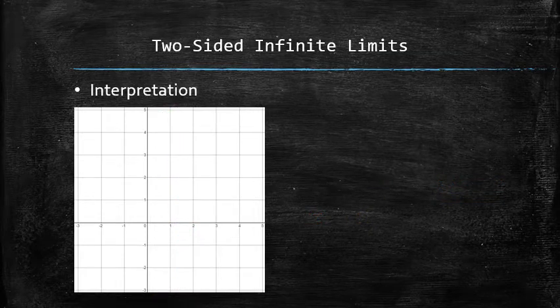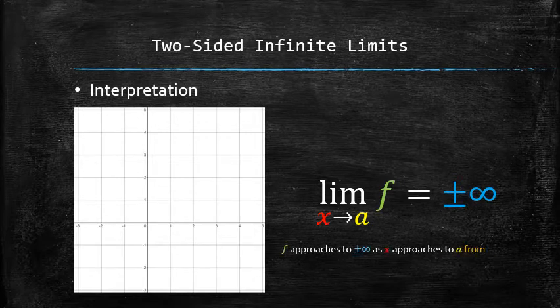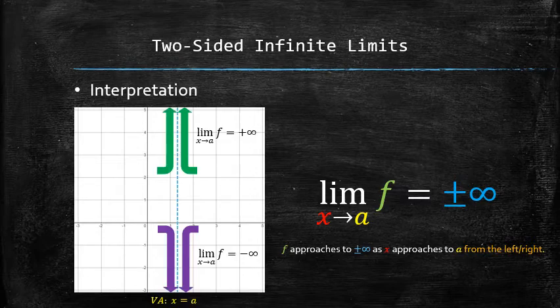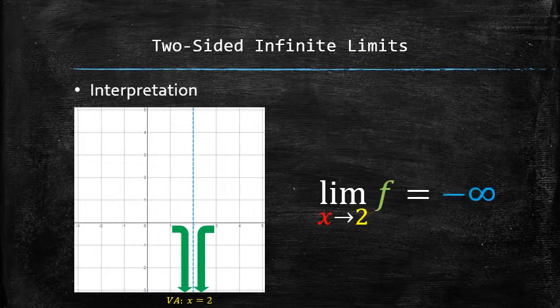So, to interpret the two-sided infinite limits, we would first read it as f approaches to positive or negative infinity as x approaches to a from both sides. Next, we would mark the asymptote x equals a on the coordinate plane and then draw the behavior according to the statement. For instance, this is what one would imagine when seeing the following limit statement.